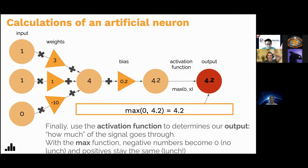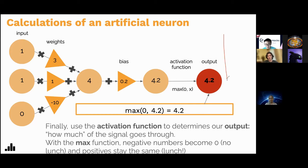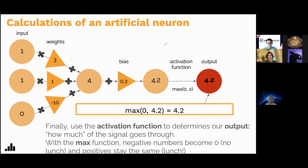ReLU takes negative inputs and sets them to zero, and passes positive inputs through unchanged. In the xy plane: anything negative outputs zero, and once it becomes positive it just passes through — like y = x — so it's linear in the positive direction but piecewise, making it technically non-linear. More importantly than how ReLU works is why we need an activation function or non-linearity at all. Let's look at the full diagram with multiple layers to explain this.